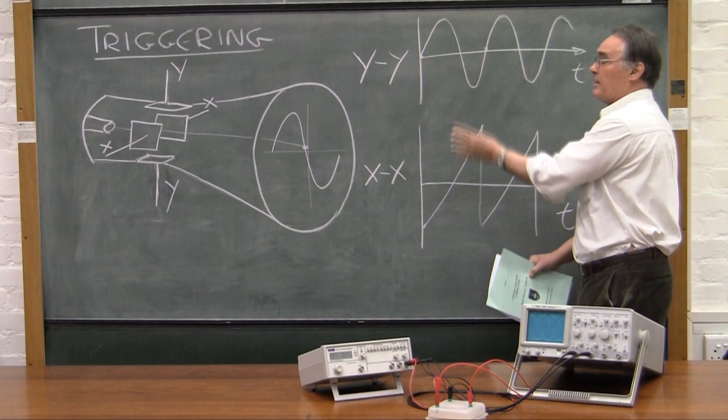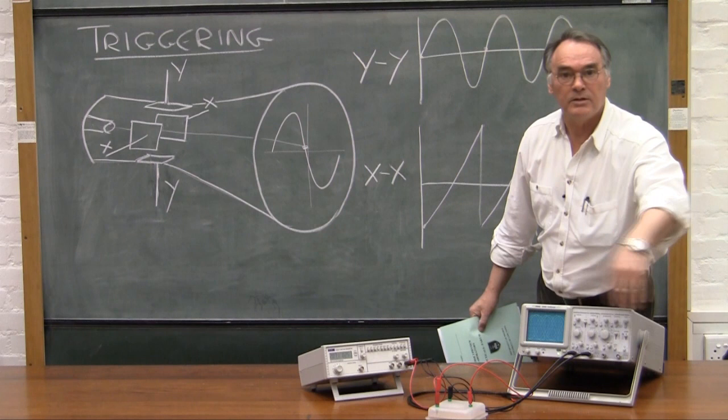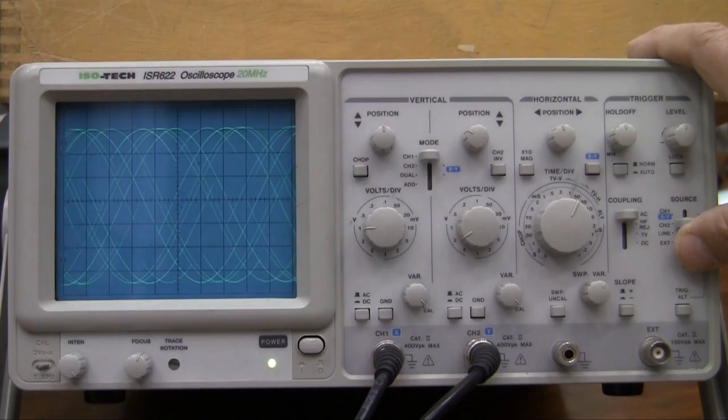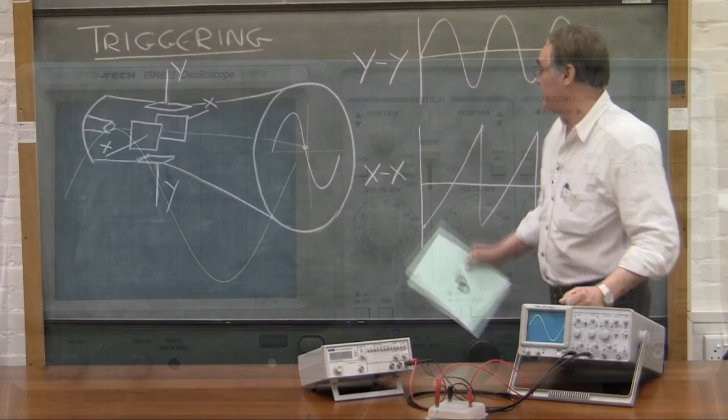Whenever you have this condition, where the signal is running backwards and forwards uncontrollably, you can be pretty sure you've got a triggering problem. Go back to the source that it can't find and you'll see the signal settles back to some regular pattern.